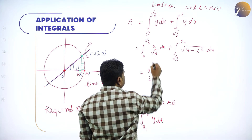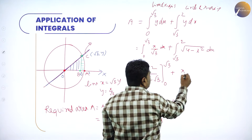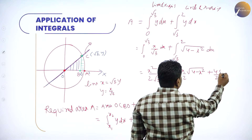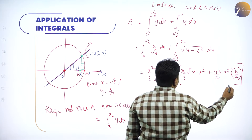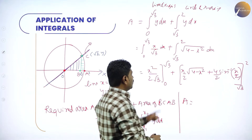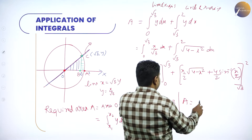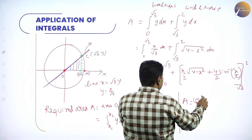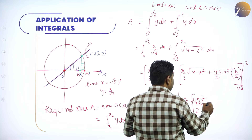So the area equals the integral from 0 to √3 of (x/√3) dx plus the integral from √3 to 2 of √(4 − x²) dx. The first integral gives x²/(2√3). The second integral uses the standard formula: (x/2)√(a² − x²) + (a²/2)·sin⁻¹(x/a), where a = 2, giving (x/2)√(4 − x²) + 2·sin⁻¹(x/2), evaluated from √3 to 2. Now carefully apply the limits.